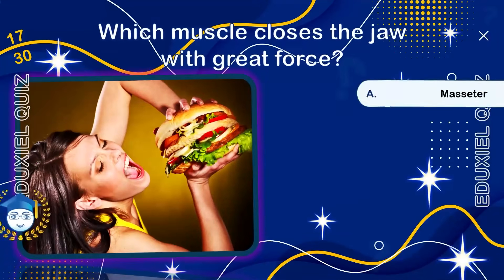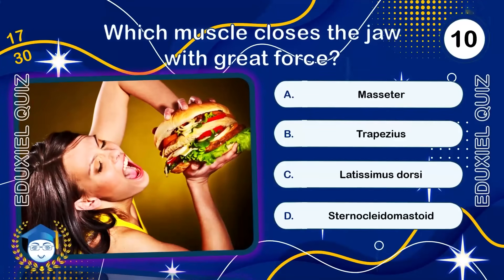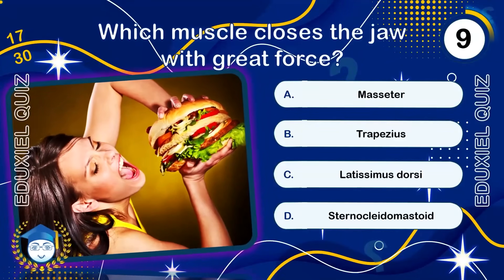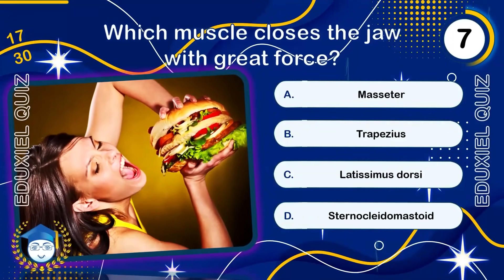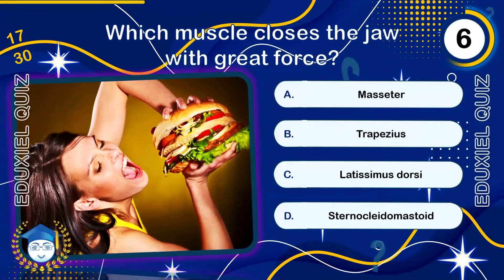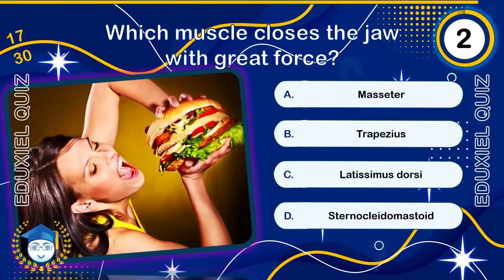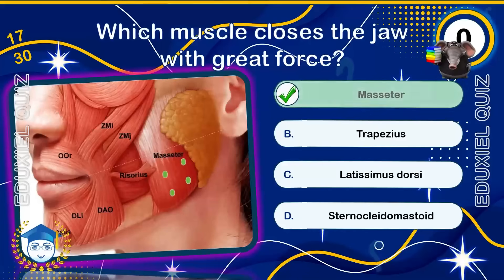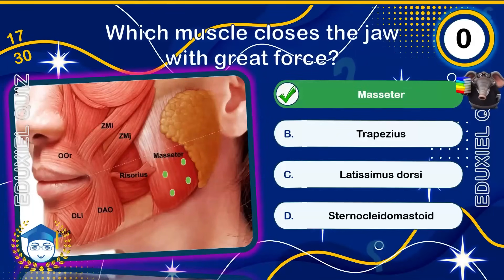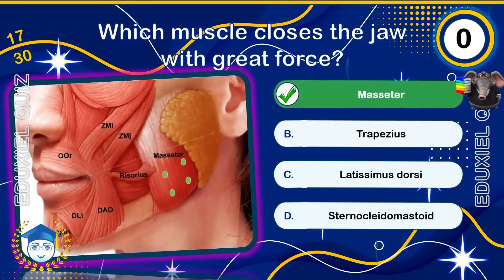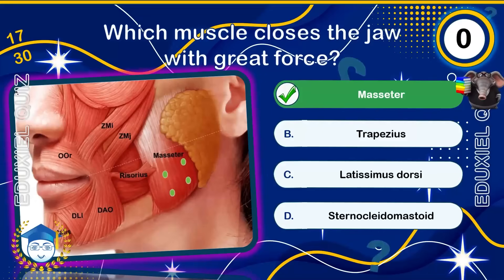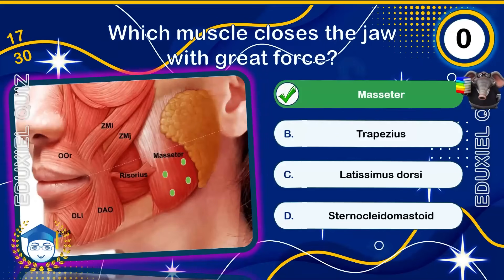Which muscle closes the jaw with great force? The masseter is one of the strongest muscles in the human body relative to its size. Located in the jaw, it can exert a bite force of up to 90 kilograms on the molars. It plays a vital role in chewing and speech.